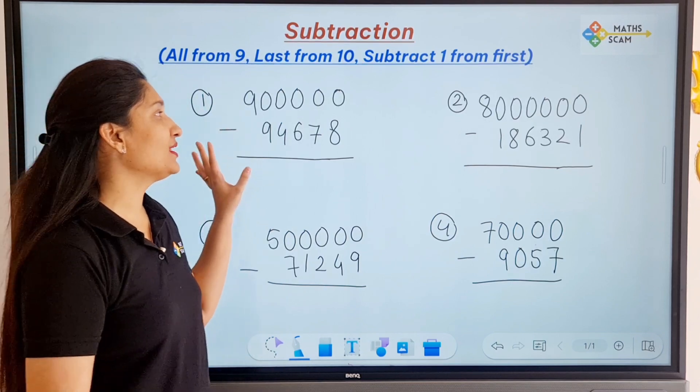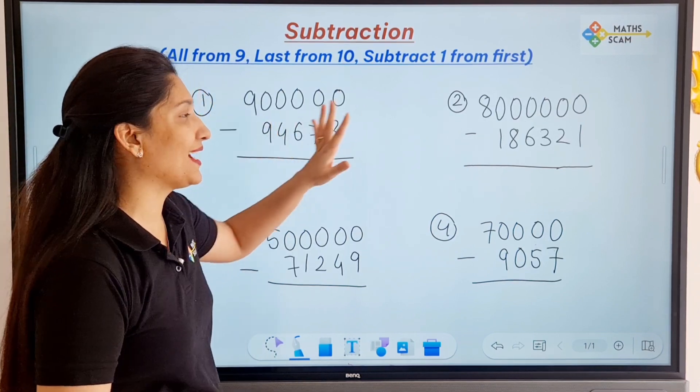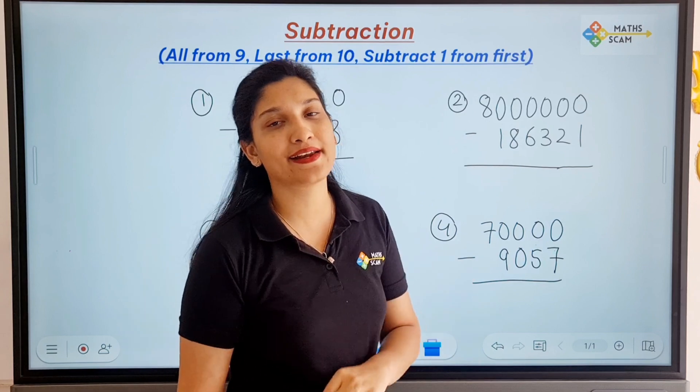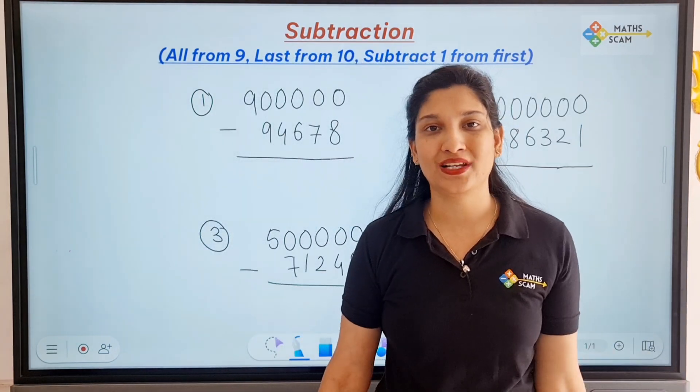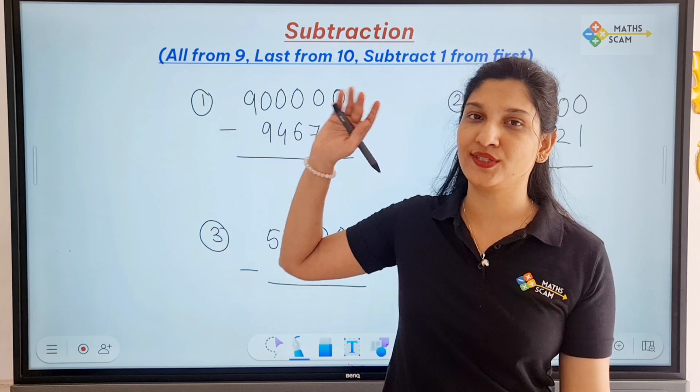In the previous one all the questions were like 1 lakh, 10,000, 1000, 100, 10,000, 1 lakh, 10 lakh, any number like 1 and number of zeros.